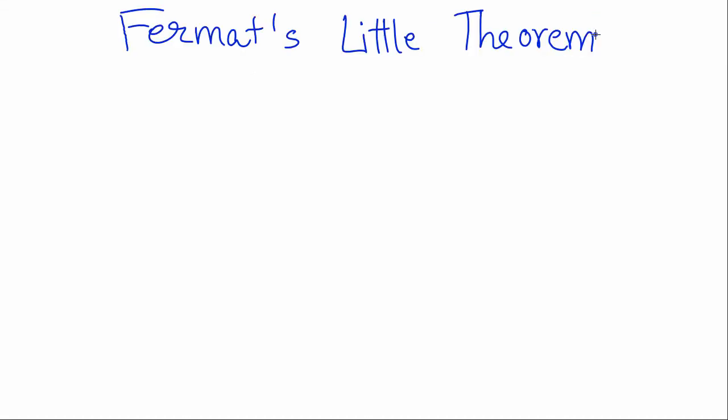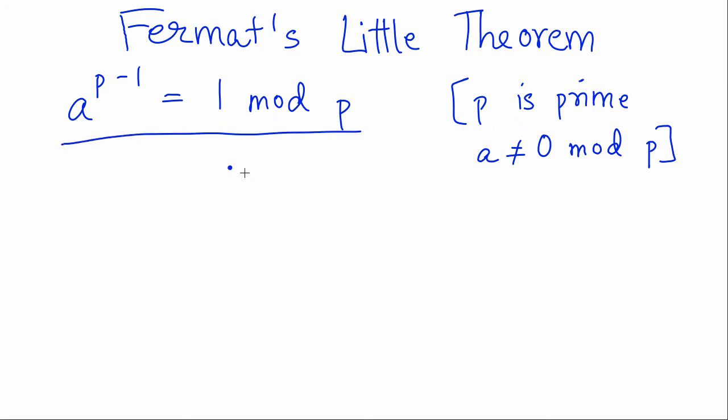One last important concept is Fermat's little theorem, FLT. In FLT, what it states is that a to the p minus 1 is just 1 mod p, provided p is prime and a is not 0 mod p. So when these two conditions are satisfied, it is always the case that a to the p minus 1 is 1 mod p.